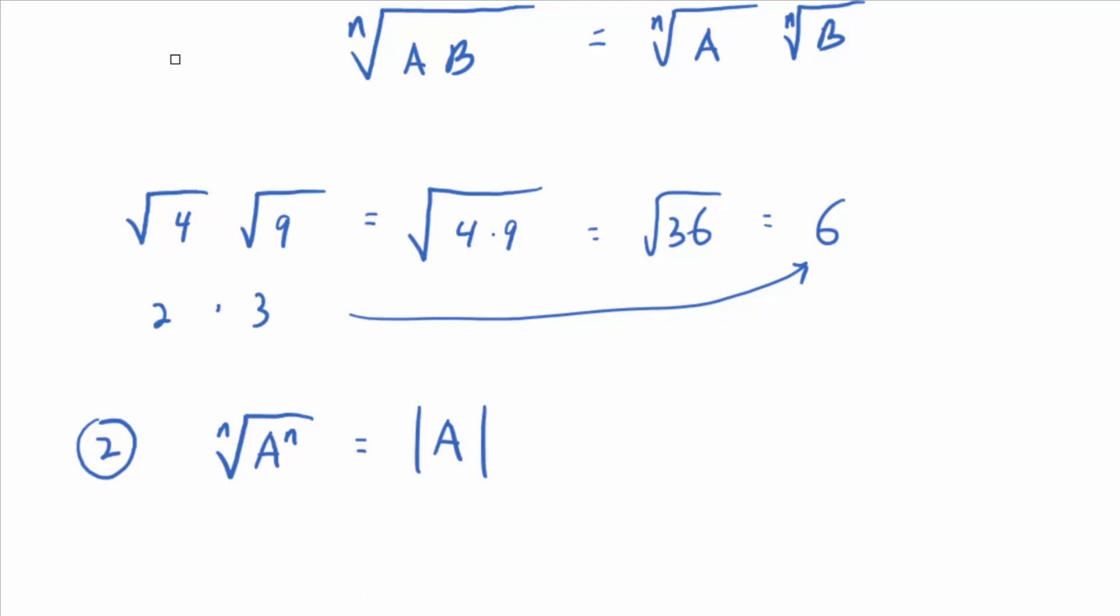But under the right conditions, if you can assume a is greater than or equal to zero, for instance, then you can say the nth root of a to the n is equal to just a, right? So we've talked about that rule before.